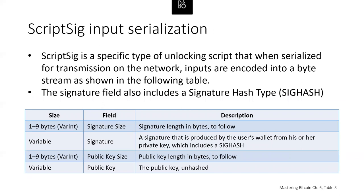The script sig is a specific type of unlocking script. When serialized, it includes a signature size in bytes, followed by a signature produced by the user's wallet from their private key which includes a sig hash, then a public key size and an unhashed public key.